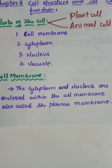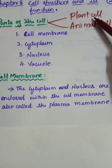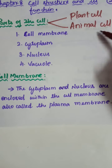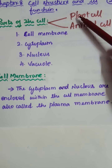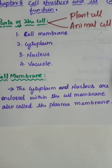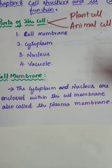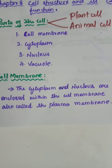Next is the cell wall. The cell wall is an additional layer surrounding the cell membrane. In the plant cell, it has a cell wall. This animal cell does not have a cell wall. The cell wall is required by plants for protection.